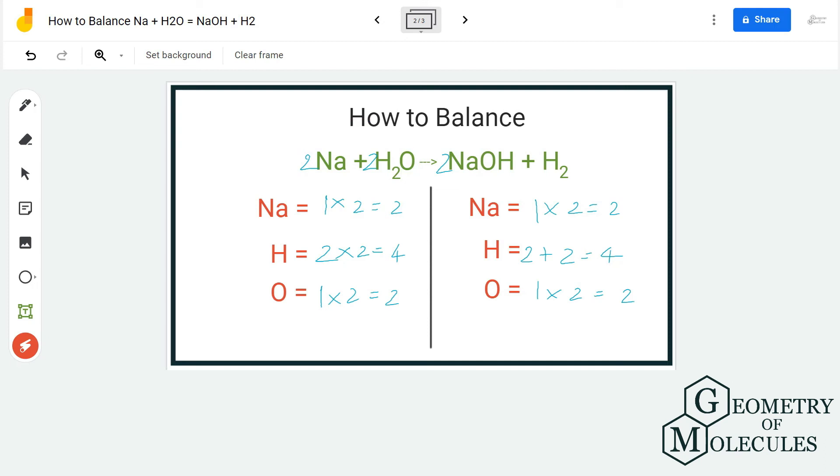And I hope this video helps you to understand how to balance this equation. Just remember to count all number of atoms on both reactant and product side, do not miss out on any atom, and make sure to balance it. If there are odd numbers of atoms, try to make it even and then balance the equation.